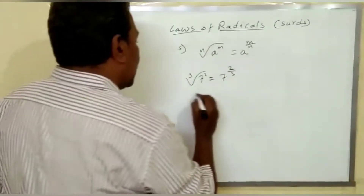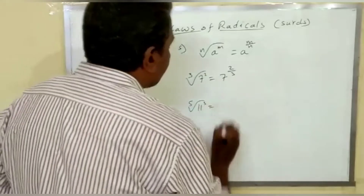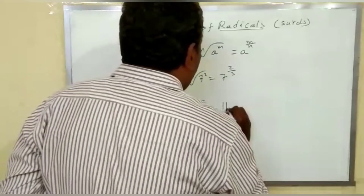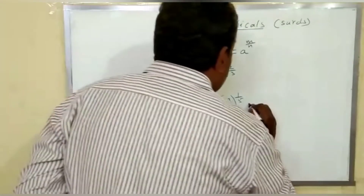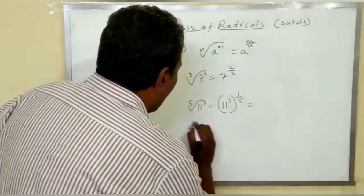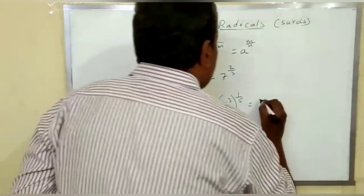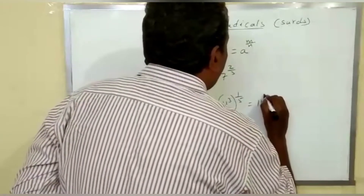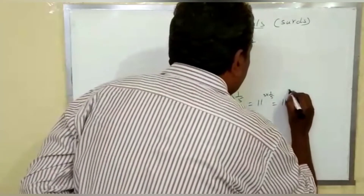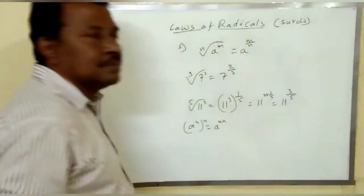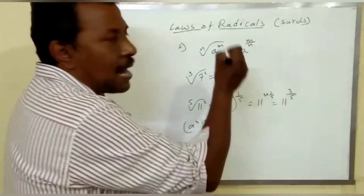How does this work? If I take the fifth root of 11 power 3, this can also be written as 11 power 3, whole power 1 by 5. This is in the form of a power m, whole power n, which equals a power m×n. So this becomes 11 power 3 into 1 by 5, which equals 11 power 3 by 5. So nth root of a power m can be written as a power m by n.